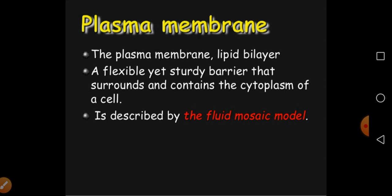In early days, many scientists tried to understand the nature of the plasma membrane and which kinds of biomolecules are present in the membrane. Later it was concluded that the plasma membrane has three biomolecules: proteins, lipids, and carbohydrates. But most were unaware of the arrangement of those molecules. In 1972, two scientists — Singer and Nicholson — proposed a model of the plasma membrane that is universally accepted, called the fluid mosaic model.